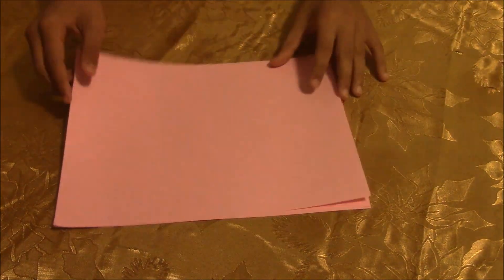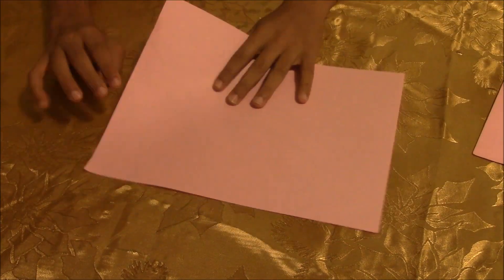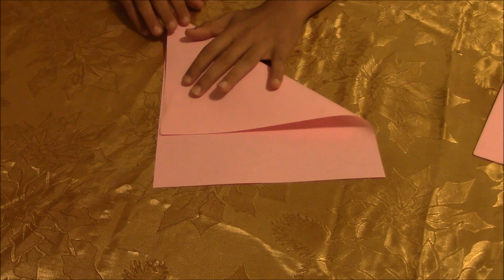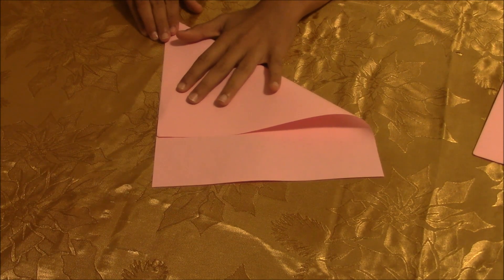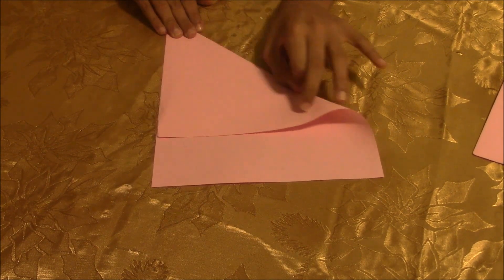Alright, so grab a paper, any color you want, and you can use origami paper. But if you don't have origami paper, you can make a square by just getting a paper and folding it into a triangle shape.